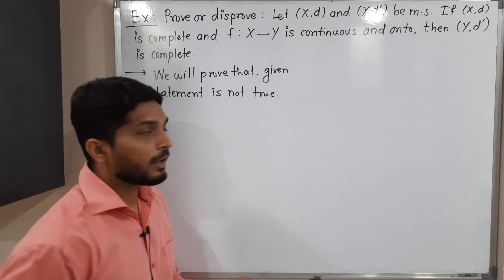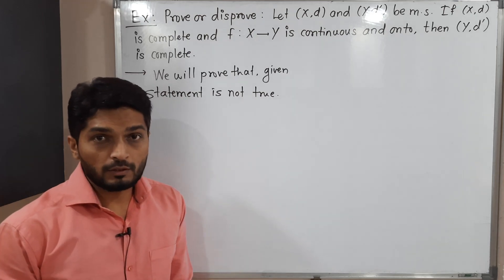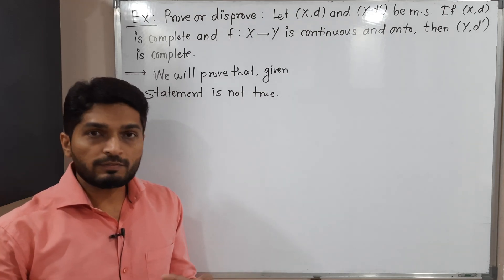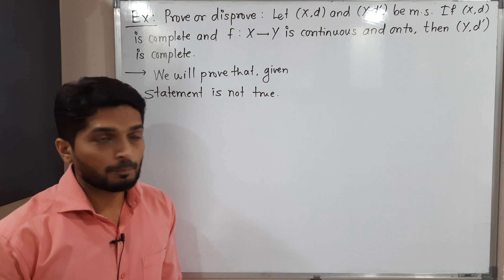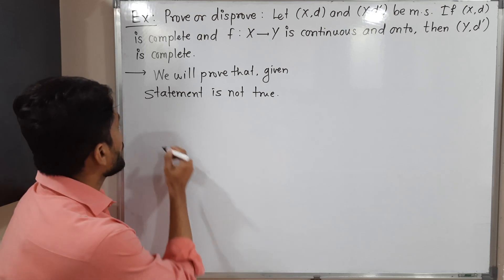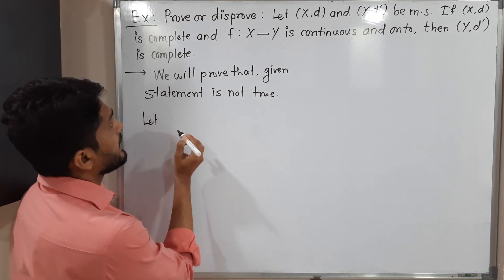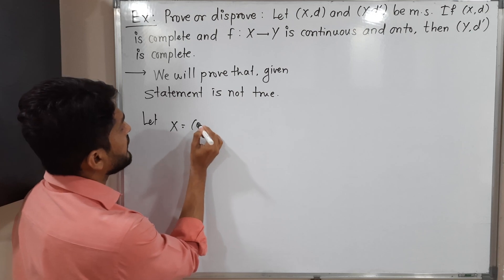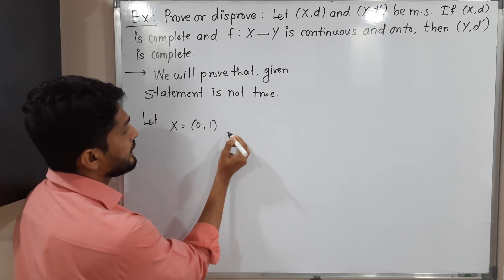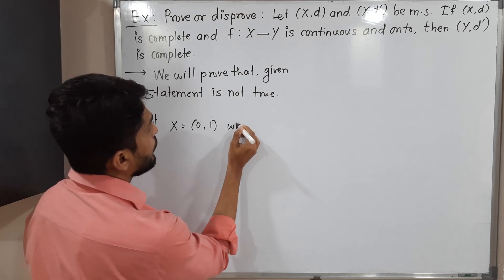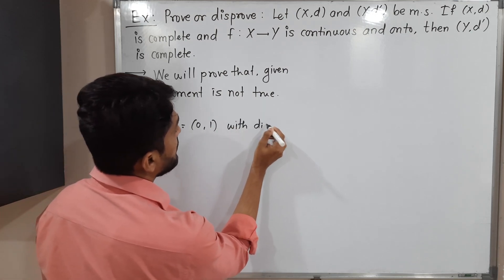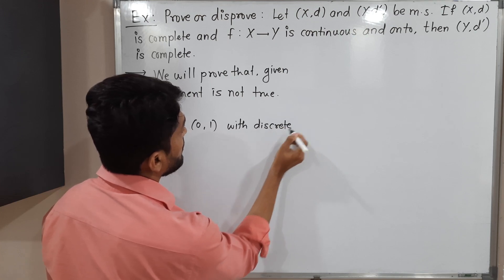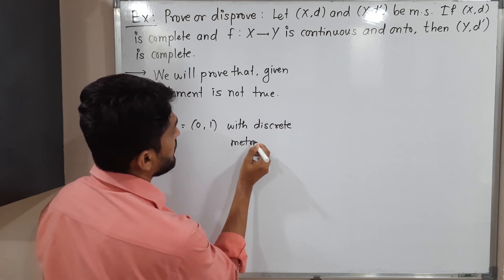We will find a counterexample which shows the statement is not true. So we want some metric spaces (X, d) and (Y, d'). Let X be the open interval (0, 1) with discrete metric d.